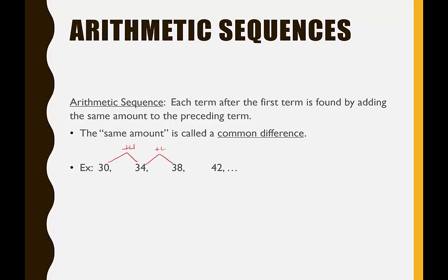To get from 34 to 38, I would add four. From 38 to 42, I would add four. So we can make the assumption that to get from 42 to the next number in the sequence, I would add four, and therefore we might say that it's 46.